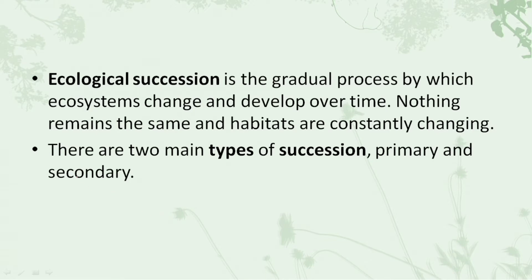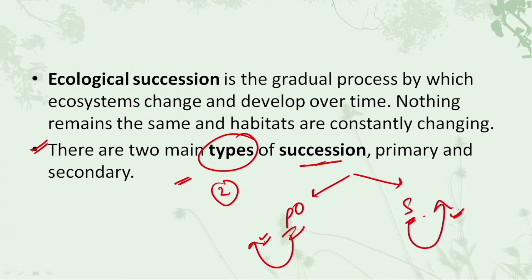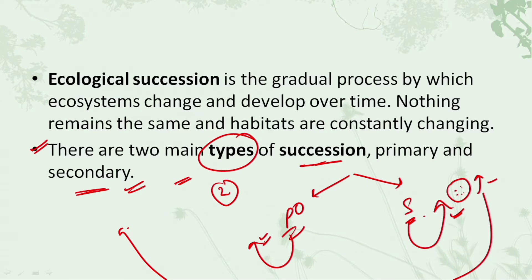Now, if we look at the types of succession, there are mainly two types. The first is primary succession and the second is secondary succession. Primary succession starts on a barren land — an area where nothing ever existed before. Secondary succession occurs in an area where some species existed before, but because of some natural calamities, all the species died, and now that particular area is being invaded by new species again.